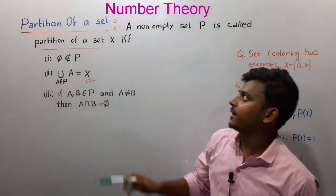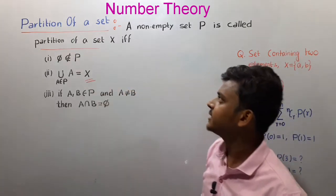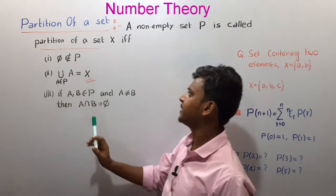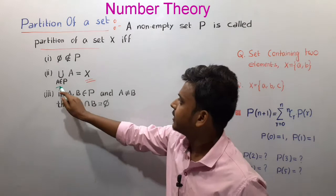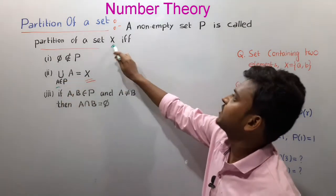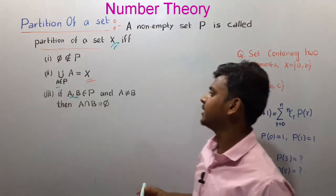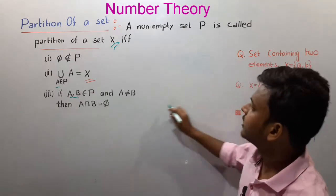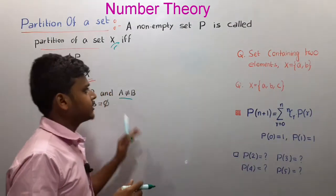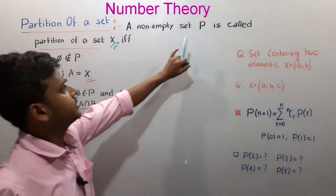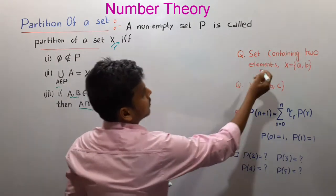This is not the partition of a set. A non-empty set P is called the partition of a set X if phi does not belong to P. This is not the partition of a set. The partition of a set is called the partition of a set.